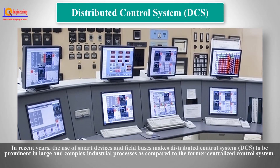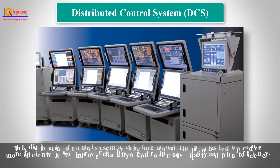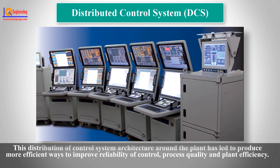In recent years, the use of smart devices and field buses makes Distributed Control System prominent in large and complex industrial processes, compared to the former centralized control system. This distribution of control system architecture around the plant has led to more efficient ways to improve reliability of control, process quality, and plant efficiency.